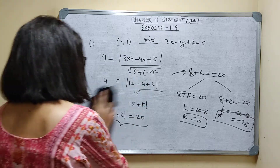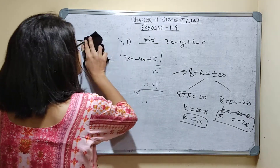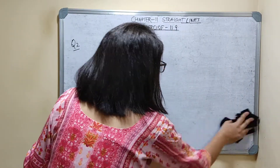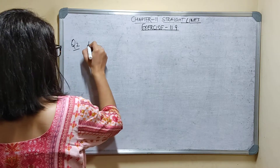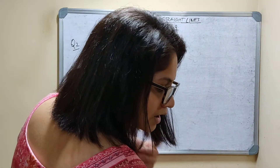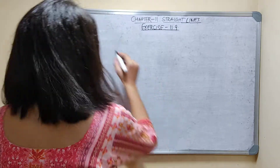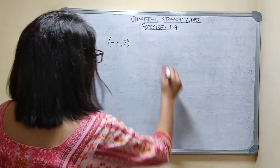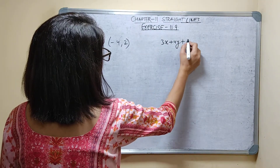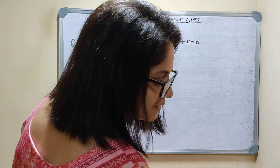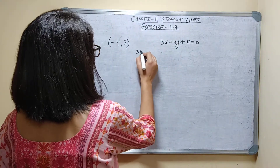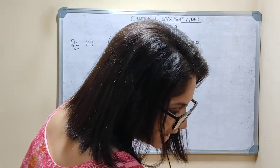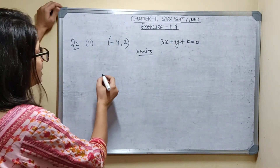Now, second part. Question number 2, second part. If the distance of the point (minus 4, 2) from the line 3x plus 4y plus k is equal to 0 is 3 units — normal distance, which means perpendicular distance — find the value of k.